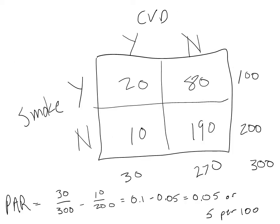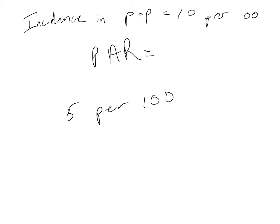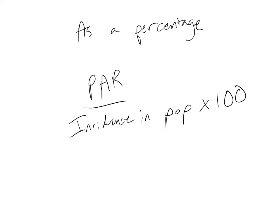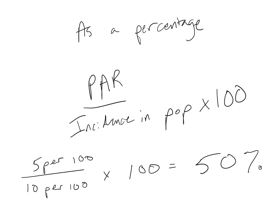Based on our 2x2 table, we get a population attributable risk of 5 per 100. This means that out of our total incidence of 10 per 100, 5 of those 10 cases are attributable to smoking. We can calculate the percentage of population risk for cardiovascular disease attributable to smoking by dividing our population attributable risk by the total incidence in the population and multiplying by 100. In this case, we get 50 percent, so 50 percent of our incidence of cardiovascular disease in our population is attributable to smoking.